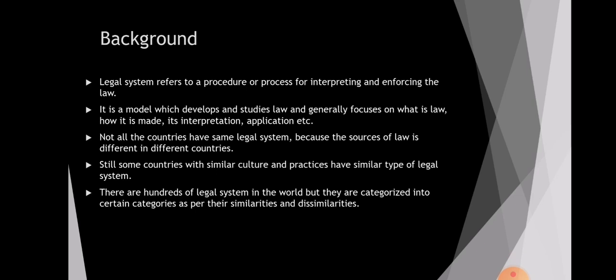A legal system means the process and procedure for interpreting and enforcing the law. It mainly focuses on what law is, how law is made, how it is interpreted, and its applications. It focuses on the process of its applications, interpretations, and procedures. The collection of all these processes and procedures makes the legal system of a country.